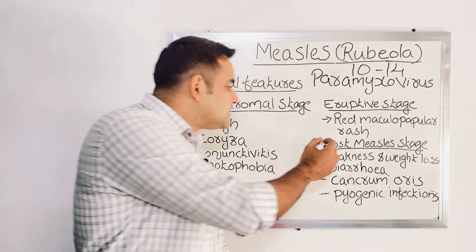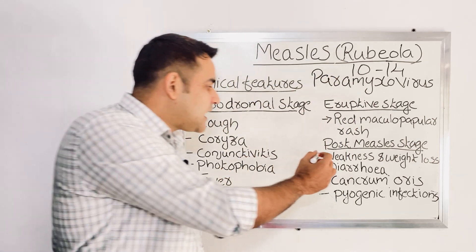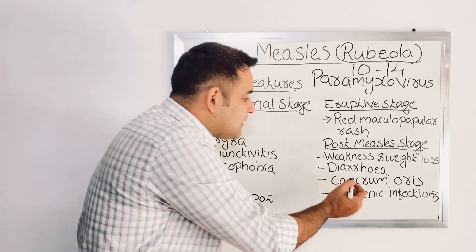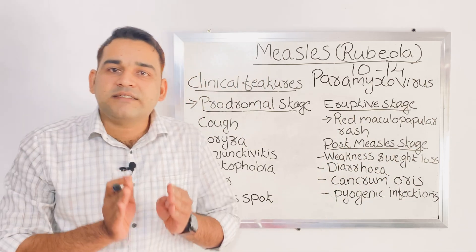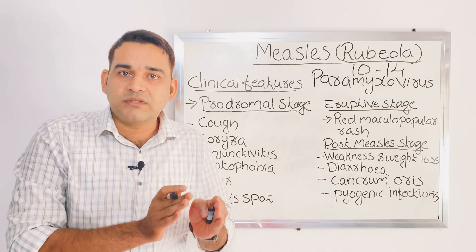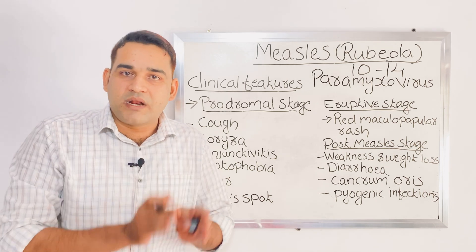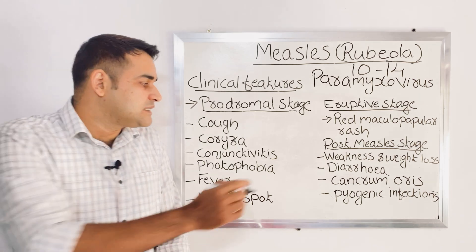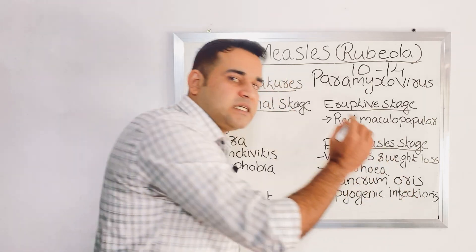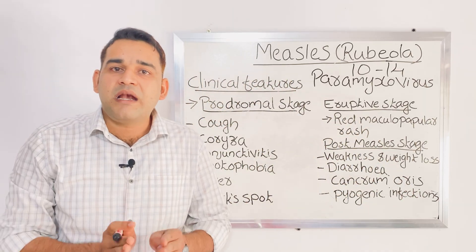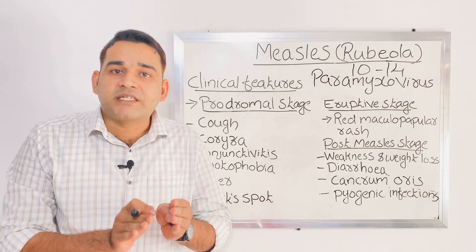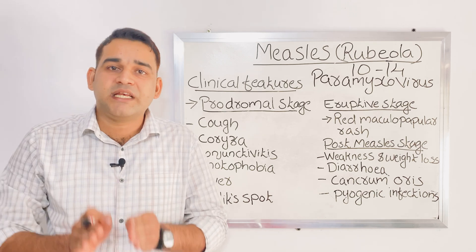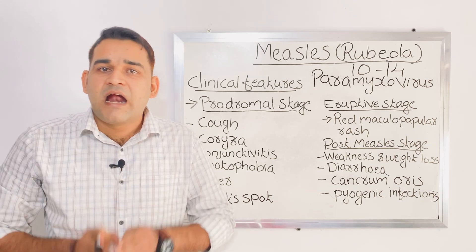The last stage is the post-measles stage. Signs and symptoms here include weakness and weight loss, diarrhea, cancrum oris — which means ulceration of the mouth seen in measles — and pyogenic infections, which are commonly caused by bacteria and lead to production of pus.